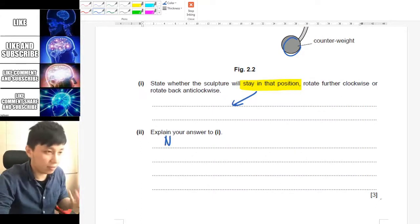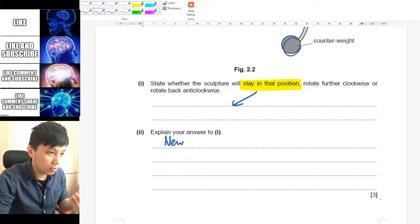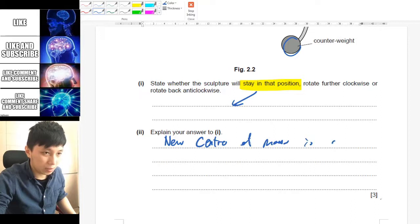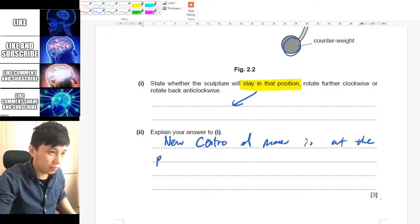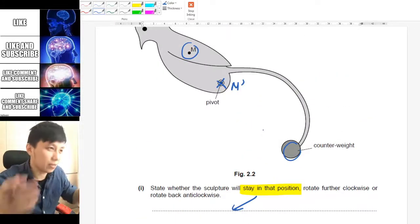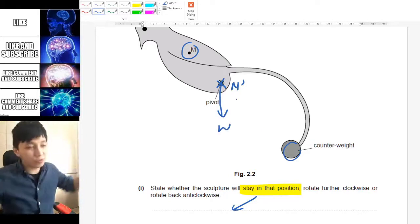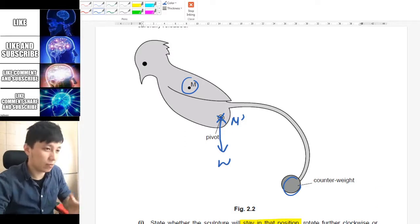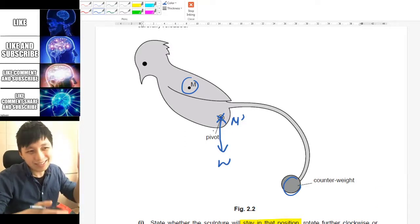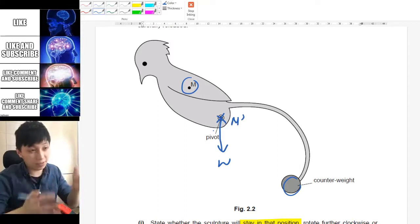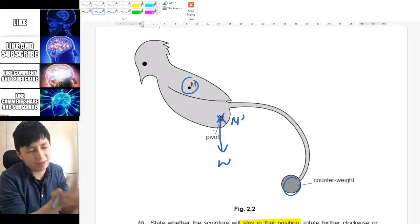The advantage of this is that you can imagine the weight of the whole system—the bird and also the counterweight—will be right here in the picture. So it doesn't really matter how you rotate it, the center of mass is still right at that position.